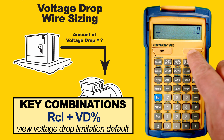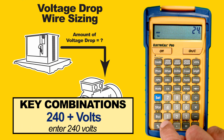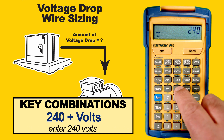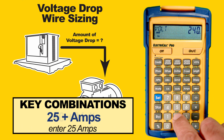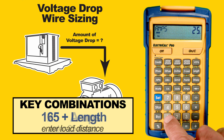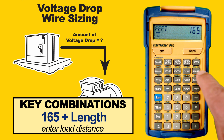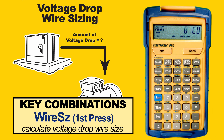Now we enter our volts. In our example, we have 240 volts, so we key 240 and then press Volts. We have 25 amps, so we key 25 and press the Amps button. Our load is 165 feet away, so we enter that and press the Length button. We press Wire Size and it says that we will need a number 8 voltage drop wire size.